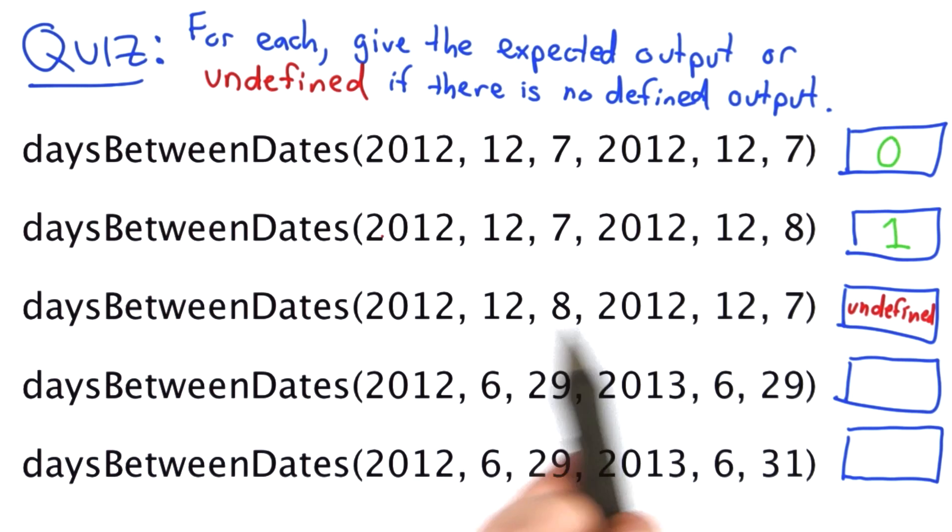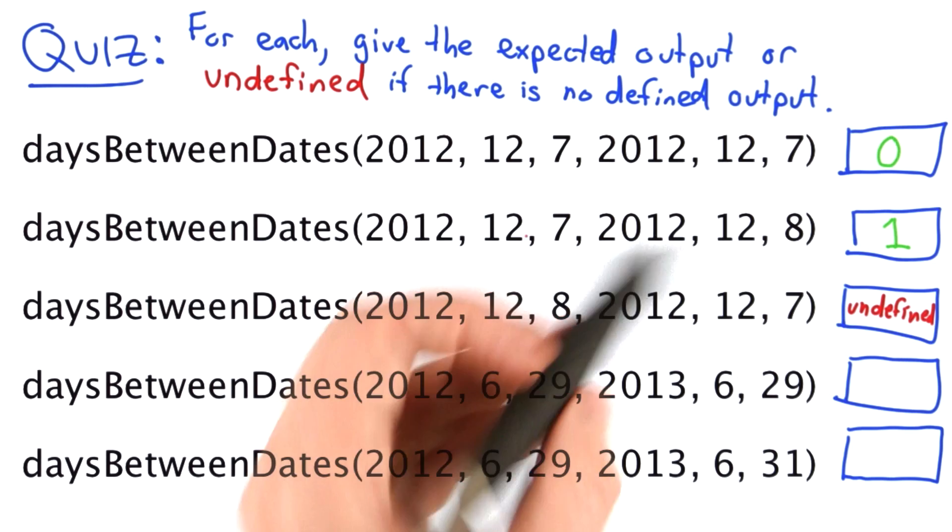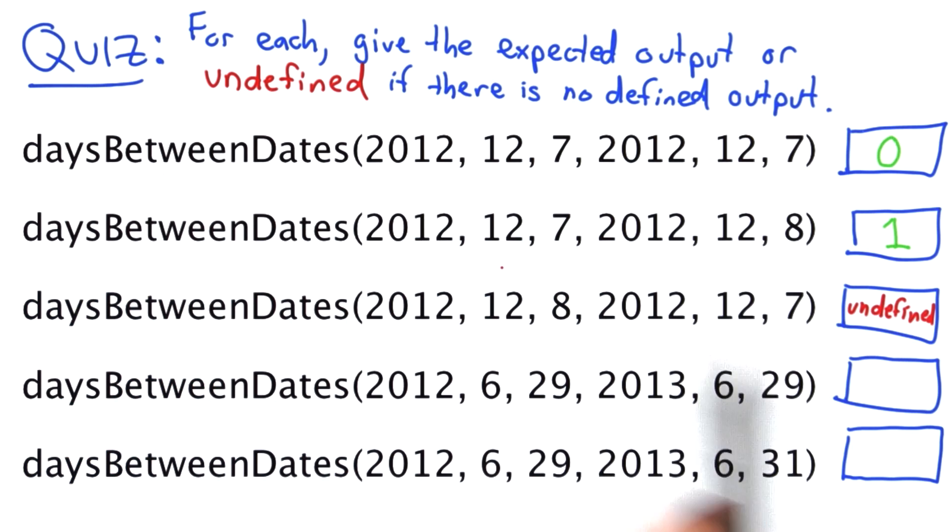It would be more useful if it gives a clear error message, or maybe even more useful if it gives negative 1, but the way we specify the problem, we don't have to worry about what the output is there because we're saying that these inputs are invalid.